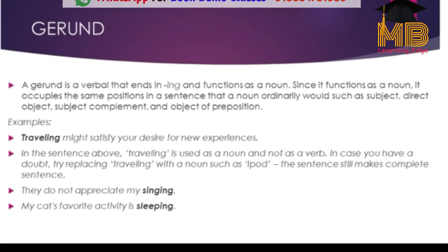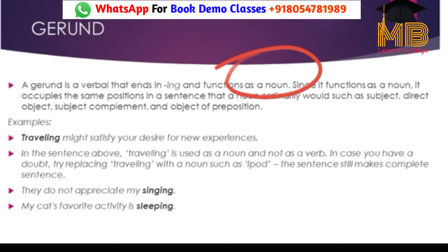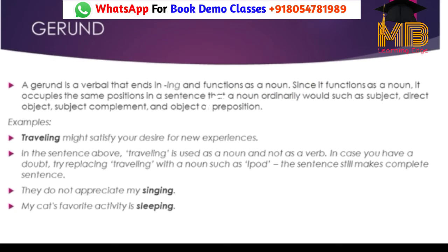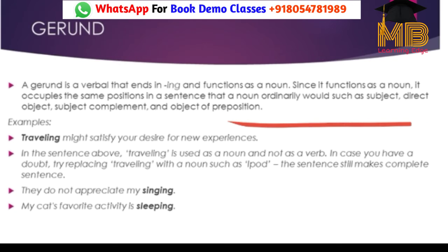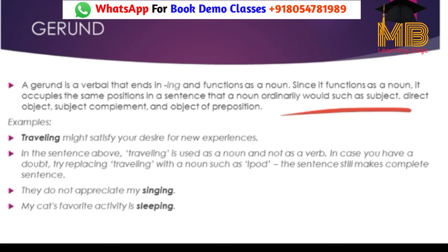Let's start with gerunds. A gerund is a verbal that ends in -ing and functions as a noun. Since it functions as a noun, it occupies the same position in the sentence that a noun would ordinarily have — like it can be a subject, a direct object, a subject complement, or an object of a preposition.